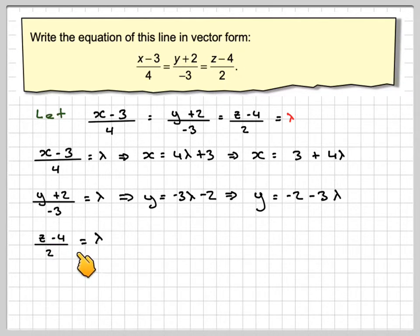In the next case, z minus 4 over 2 is equal to lambda, and then we're going to get z is 2 lambda plus 4, but we'll write that as z is equal to 4 plus 2 lambda.